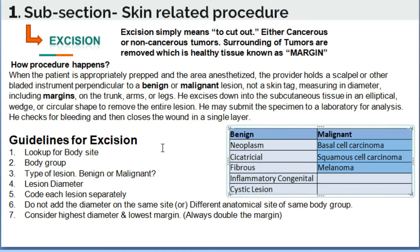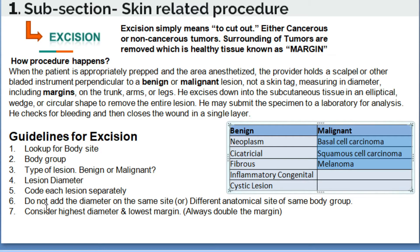As a coder, you have to follow guidelines to assign codes. You must look up the body site, then the body group, then identify the type of lesion — benign or malignant — as mentioned by the physician. In excision, code each lesion separately. Do not add the diameter of lesions on the same site or different anatomical sites within the same body group.